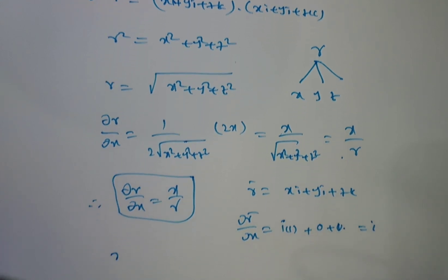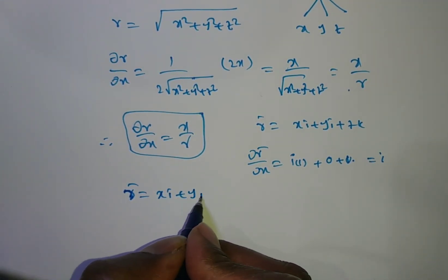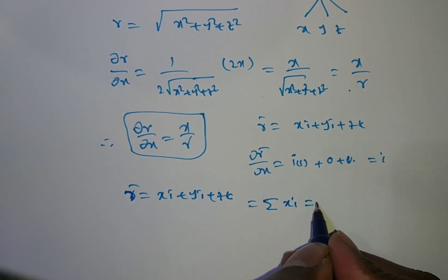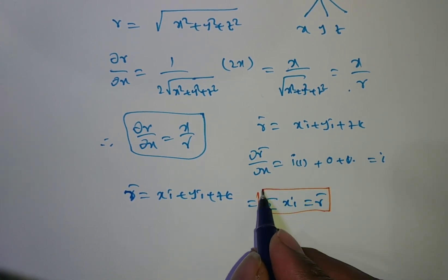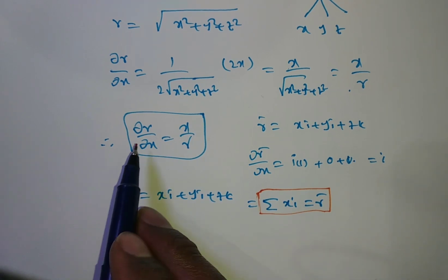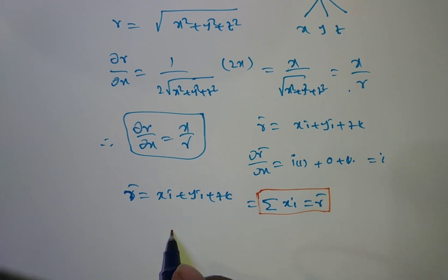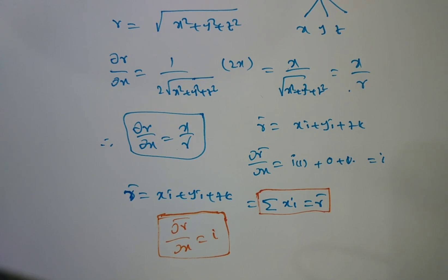You have to remember: r̄ = xi + yj + zk, which can also be written as Σxᵢ. So r̄ = Σxᵢ. Also, ∂r/∂x = x/r, ∂r̄/∂x = i, ∂r̄/∂y = j, ∂r̄/∂z = k. These values you have to remember. Now we will solve the problems.